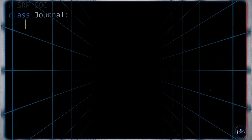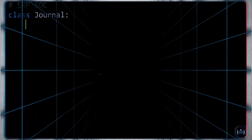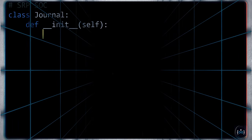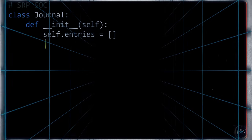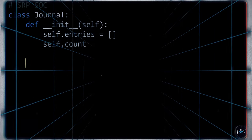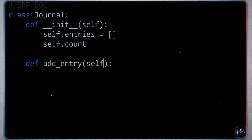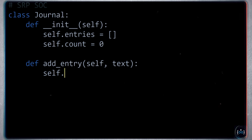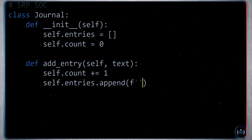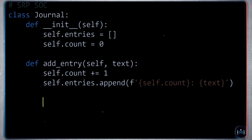Let me show you how this can be set up. Let's suppose you make a class called Journal. We'll have an initializer with entries as a list and a count index to prefix all the entries. When it comes to adding an entry, we'll increment the count and add the actual entry to the list via self.entries.append, storing the count as a prefix, colon, then the actual text.